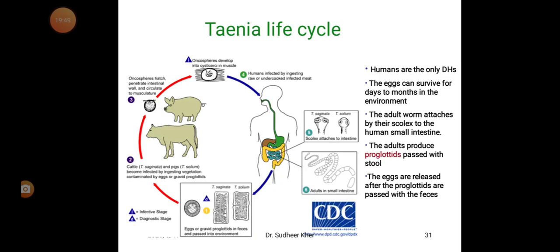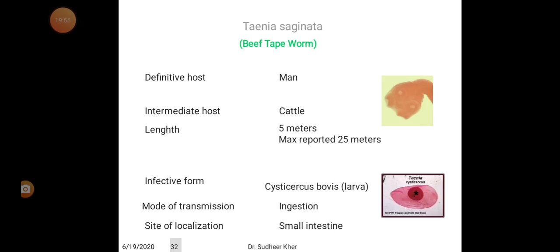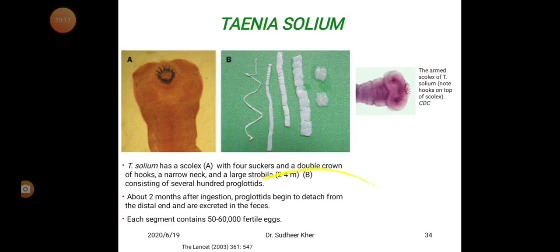In the case of Taenia solium, the pig is the intermediate host and the definitive host is man. Sometimes the pig also acts as definitive host. Taenia solium has a scolex with four suckers and a double crown of hooks, a narrow neck, and a large strobila of two to four meters consisting of several hundreds of proglotids.